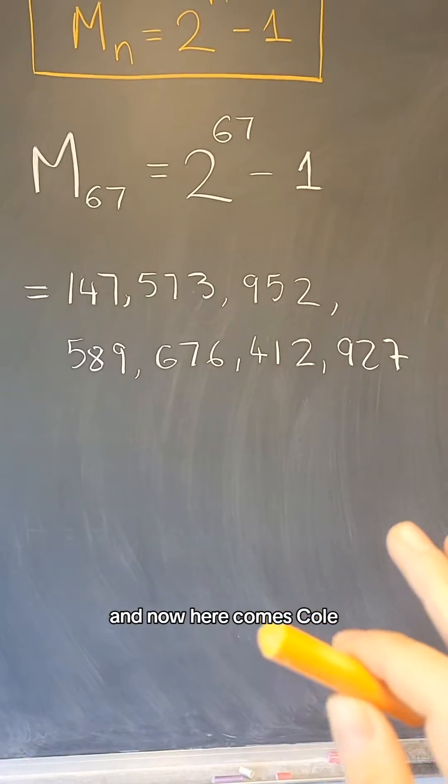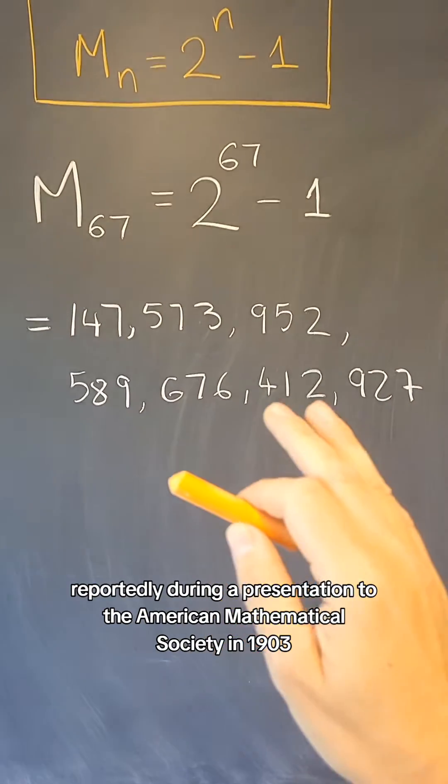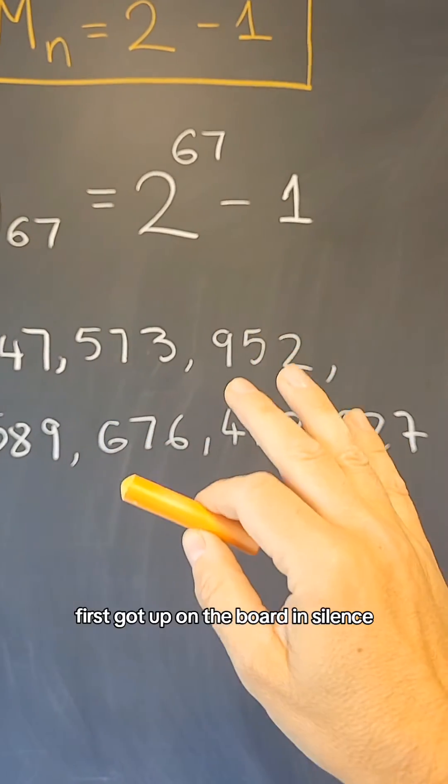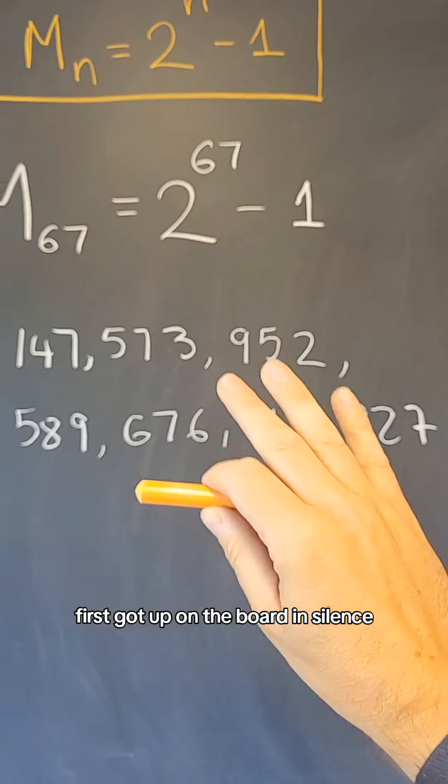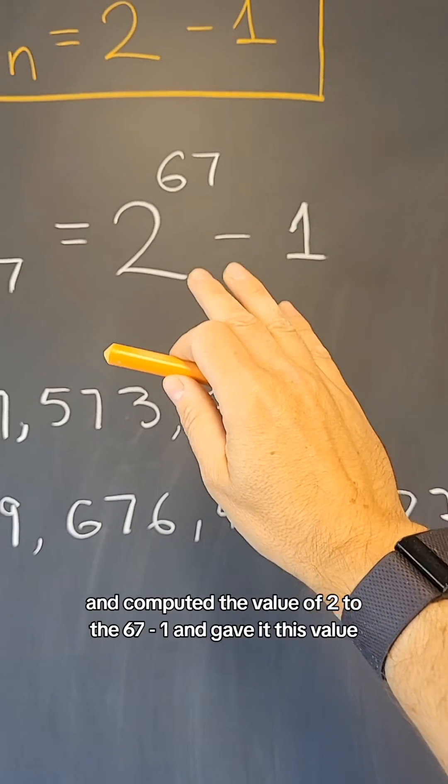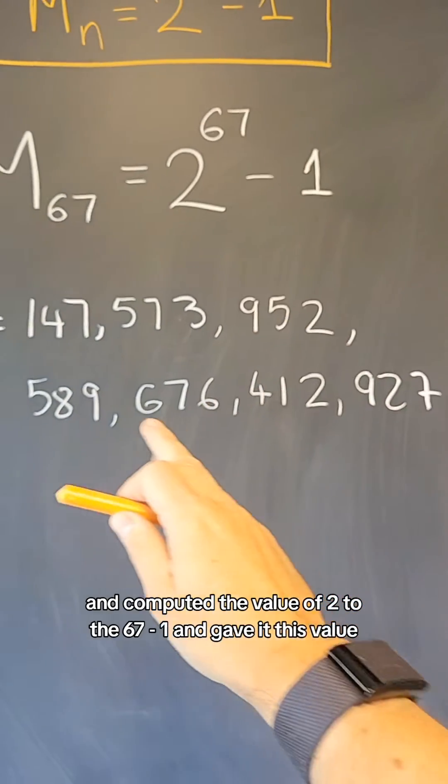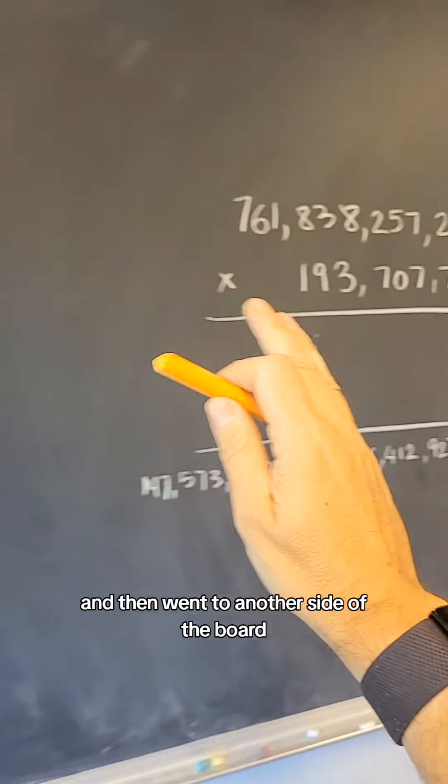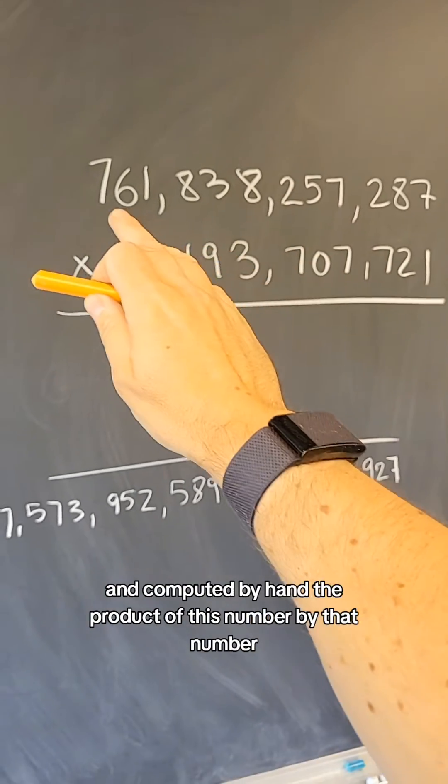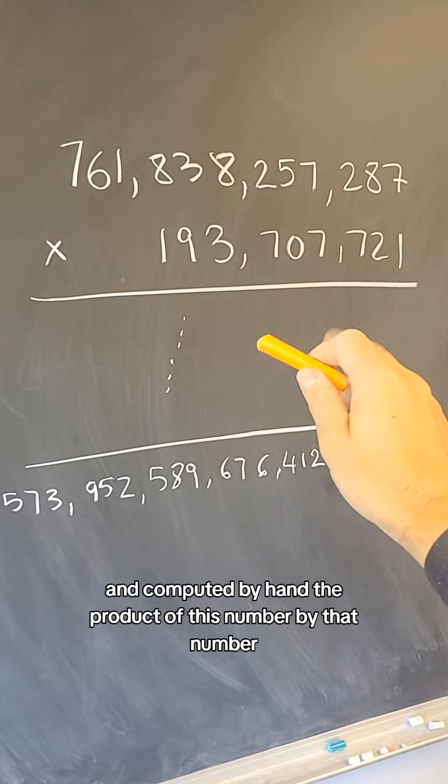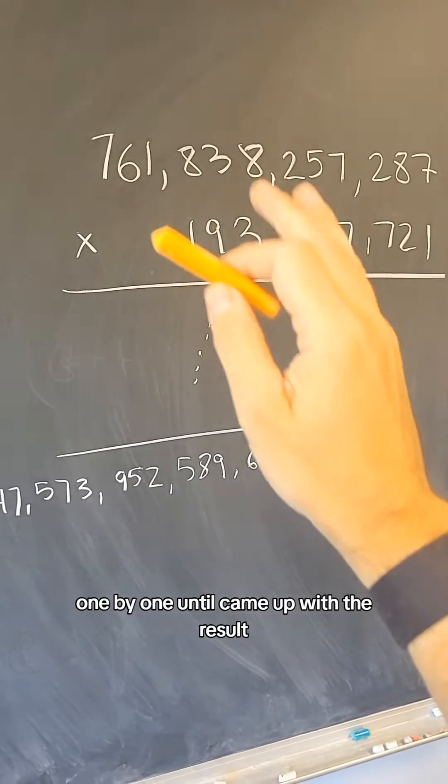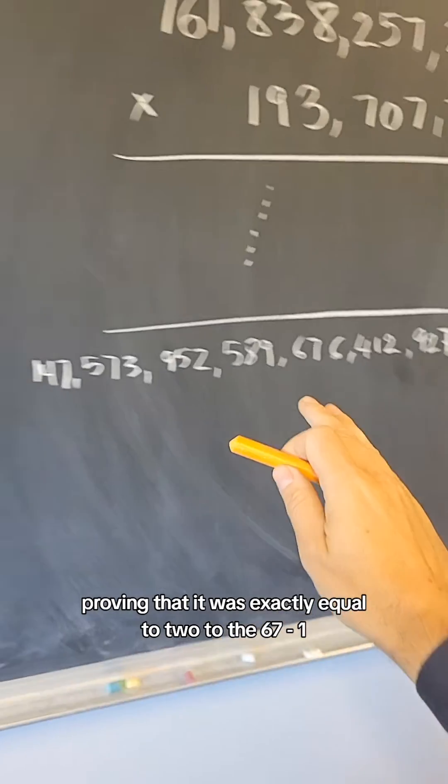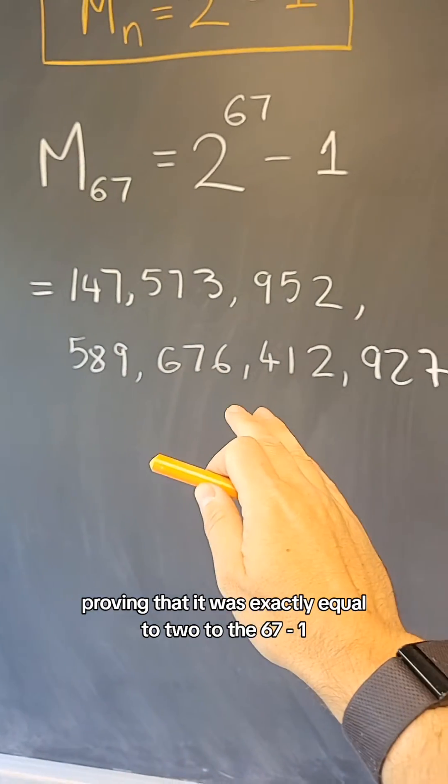And now here comes Cole. Cole reportedly during a presentation to the American Mathematical Society in 1903, first got up on the board in silence and computed the value of 2 to the 67 minus 1 and gave it this value and then went to another side of the board and computed by hand the product of this number by that number one by one until came up with the result proving that it was exactly equal to 2 to the 67 minus 1.